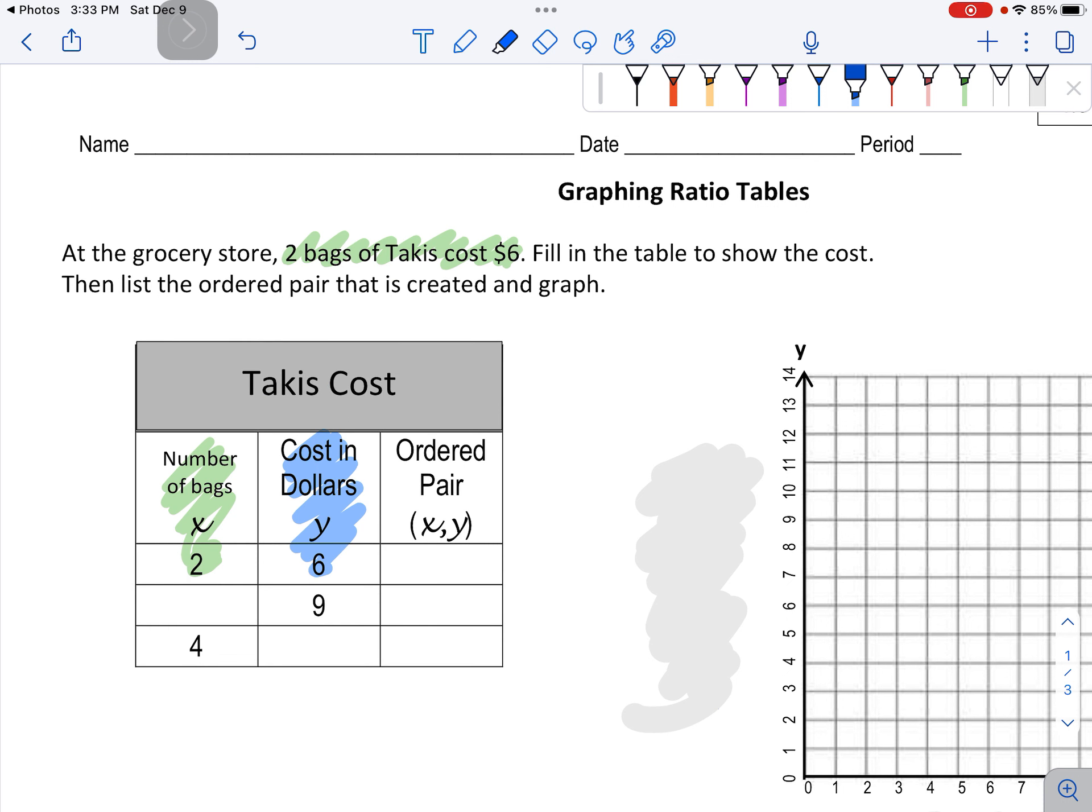Here it is in our table. Two bags, $6. We need to complete this table to show the cost and then we need to list them as ordered pairs and create that graph.